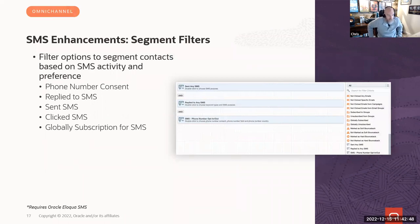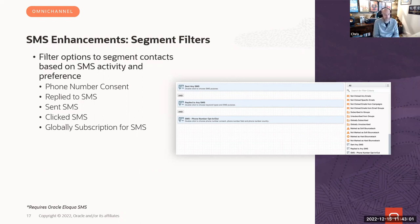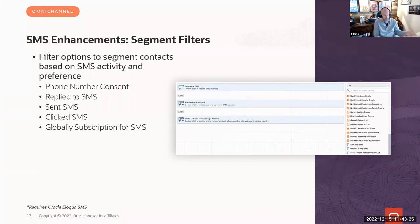SMS was introduced as a native channel about a year ago and has seen great interest. Investment continues with every release. Coming soon is segmentation based on SMS activities — phone number consent will be the first, expected in 23A, with 'replied to' also in the 23A plan. Additional SMS-related filters within segments will follow in 23B and 23C, helping not just with audience creation but with decisioning on canvases as well.